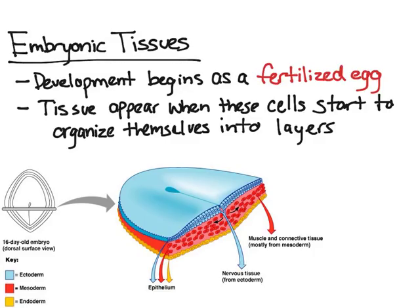When there are enough cells — when the egg has divided into enough cells — the cells will organize themselves into layers. And there will be three primary layers that we're going to talk about. They are called the ectoderm, which is the outer layer, shown in blue. The mesoderm, which is the middle layer, shown in red. And then finally, the endoderm, which is the inner layer, shown in yellow. Each layer gives rise to a specific thing in the body, a specific system. Now let's talk about that more in depth.